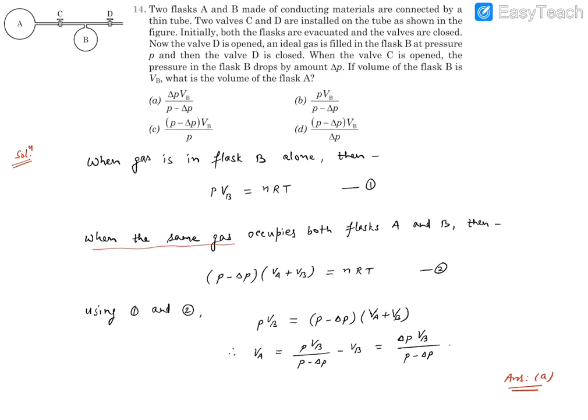Then after, when the gas occupies both flask A and B, the pressure of B has dropped by delta P. We know the pressure at all points will be identical, so the entire pressure is P minus delta P. The new volume is the volume of B as well as volume of A. The thin tube can be ignored. So the volume becomes VA plus VB, equal to the same amount of moles of gas and the same temperature.